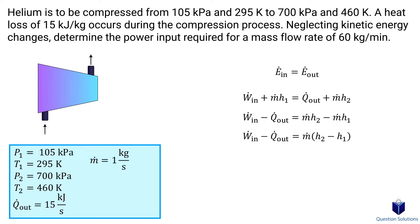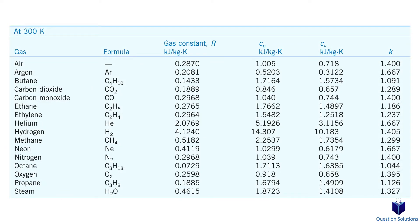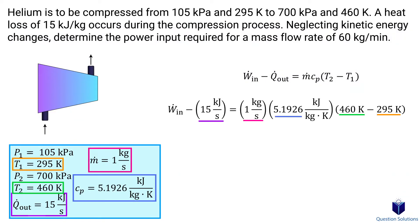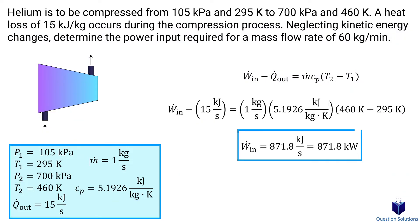Now we can find the difference in enthalpy using this equation. All that's left for us to do is plug values in, but we don't have the specific heat value. So let's look it up on a table for helium. So that's the value right here. Now we can plug our values in. So we need 871.8 kW to run this compressor.